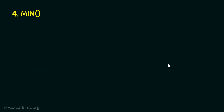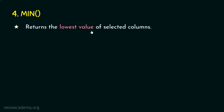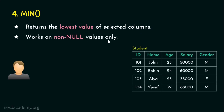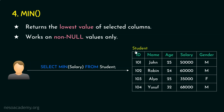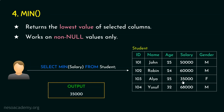Let's move on to the fourth aggregate function, MINIMUM. From the name itself, we can see this is going to return the lowest value in the selected column. This MIN function works on non-null values only. Assume the user applies: SELECT MIN(salary) FROM student. The user expects the minimum value from the salary column. The output is going to be 35,000 because that is the minimum value in that column.